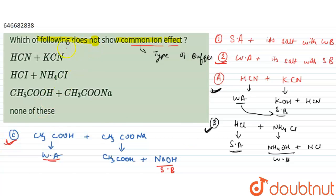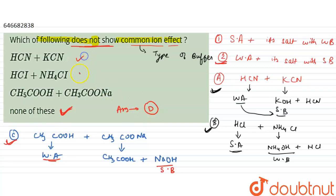Since all three compounds — Option A, Option B, and Option C — show the common ion effect, the correct answer is Option D: none of these. The compound which is not showing the common ion effect is none of the listed ones.